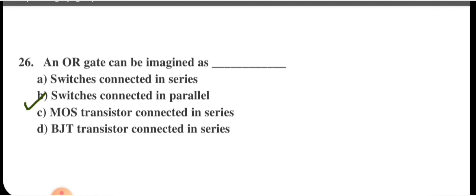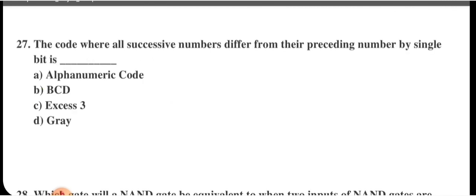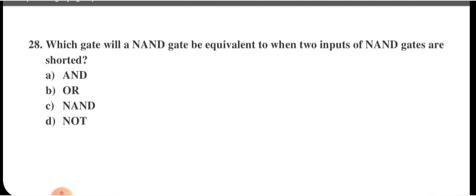The code where all successive numbers differ from their preceding numbers by a single bit is the Gray code. In Gray code, moving to the next value always changes only one bit. Option D is correct.